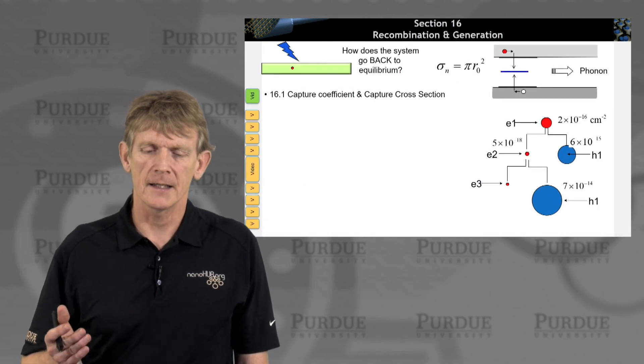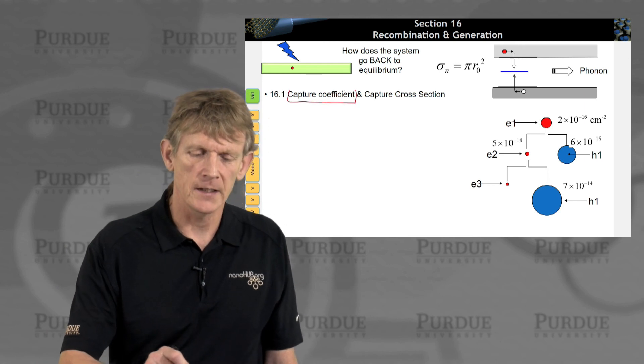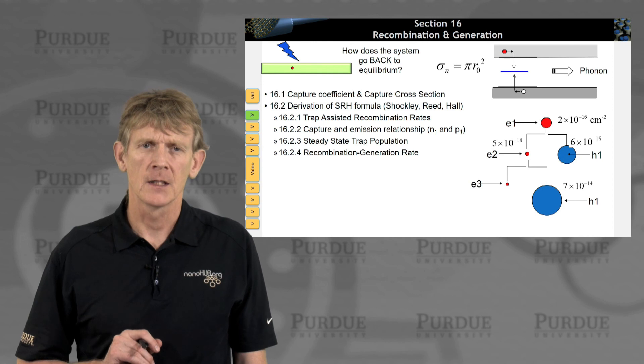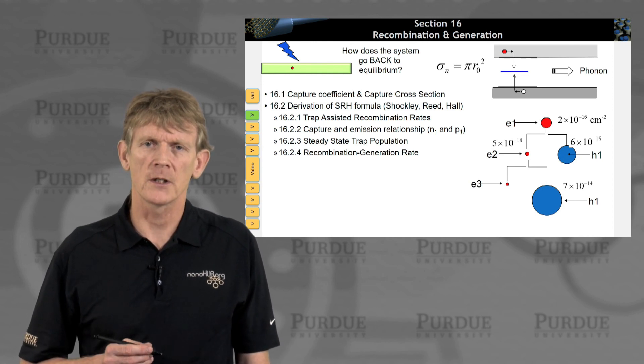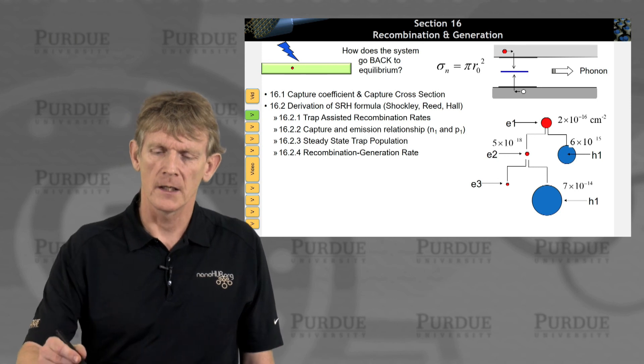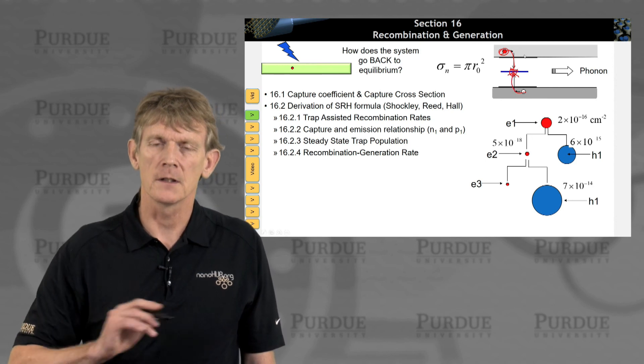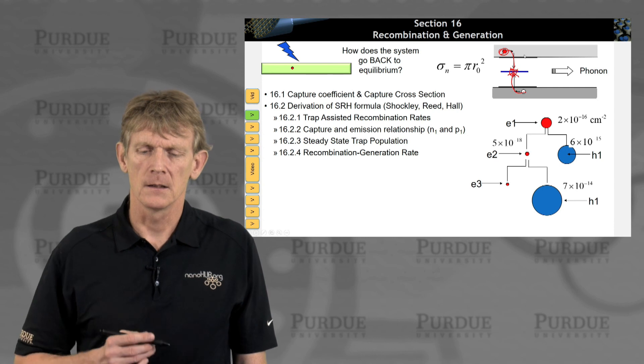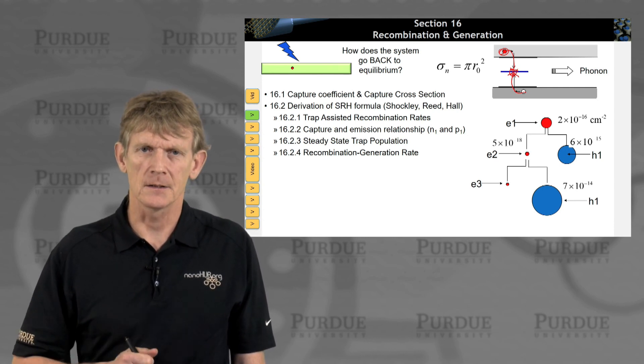So, with that, we will be using these capture coefficients quite a bit in all of these coming-up segments. And in the next segment, we're going to derive the Shockley-Reed-Hall recombination rate, where electrons come down into a trap, and a hole goes up to destroy that electron. And in the process, an electron and a hole are destroyed. So, I'll see you at the next section.